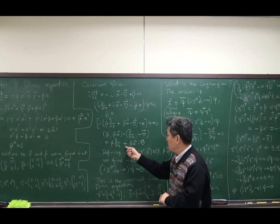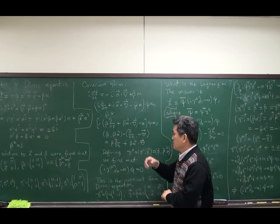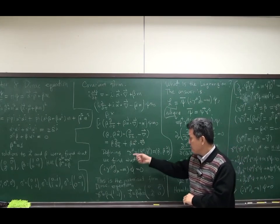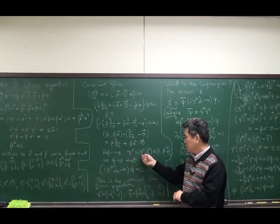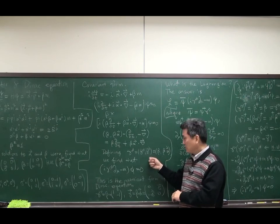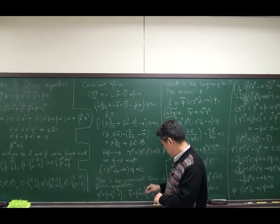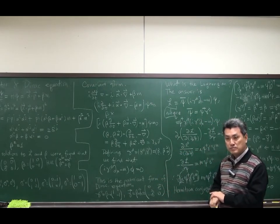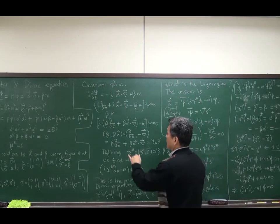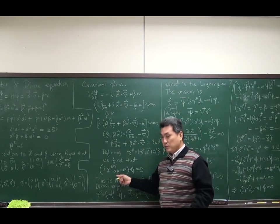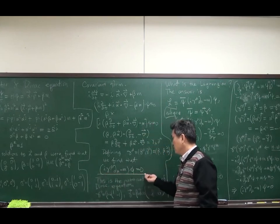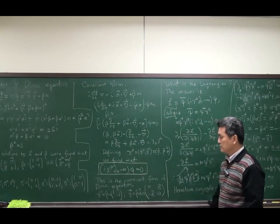If I multiply them, I have plus sign. So, I can reproduce the scalar product style. So, if we define gamma matrices like that, whose 0 component is beta and the spatial component is beta alpha, then this is just gamma mu round mu, something like that. And minus mass. This is the covariant form for the Dirac equation.